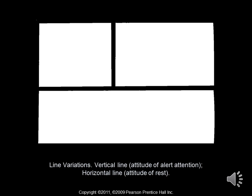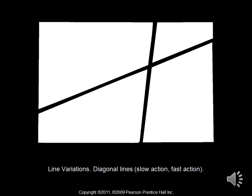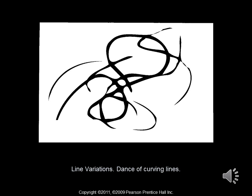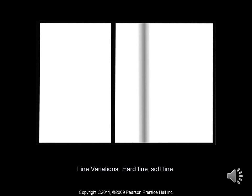Here we have two different line variations. We've got our vertical line, which is an attitude of alert attention, and a horizontal line, which is an attitude of rest. Diagonal lines can add a sense of motion or direction in an artwork — here we have slow and fast action diagonal lines. Here we have sharp, jagged line, which can represent something like broken glass or electricity. Here we have some intertwining or dancing curving lines, which can represent motion, energy, or action in an artwork.